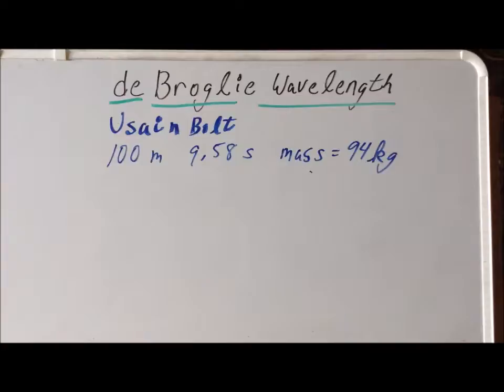The macroscopic object that we're going to use is the great Jamaican sprinter Usain Bolt. Mr. Bolt set the world record in the 100 meter dash with a time of 9.58 seconds. He did this in 2009.